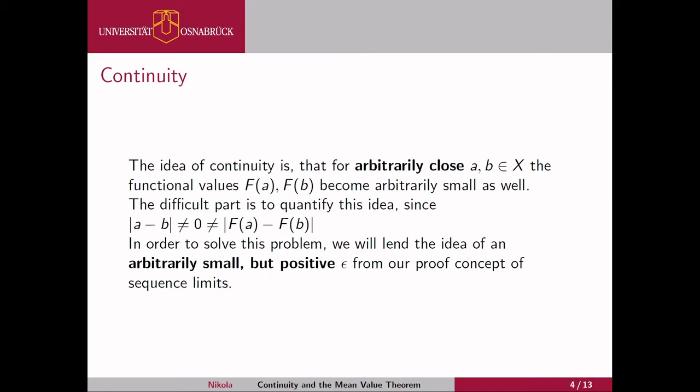Since every tiny jump between a and b where a and b are different numbers is not zero, it's difficult to prove. In order to do so, we will go back to sequences and limits of sequences, borrowing the idea of a small but positive epsilon which always has to be fulfilled, and use the same concept as with sequences in order to define continuity.